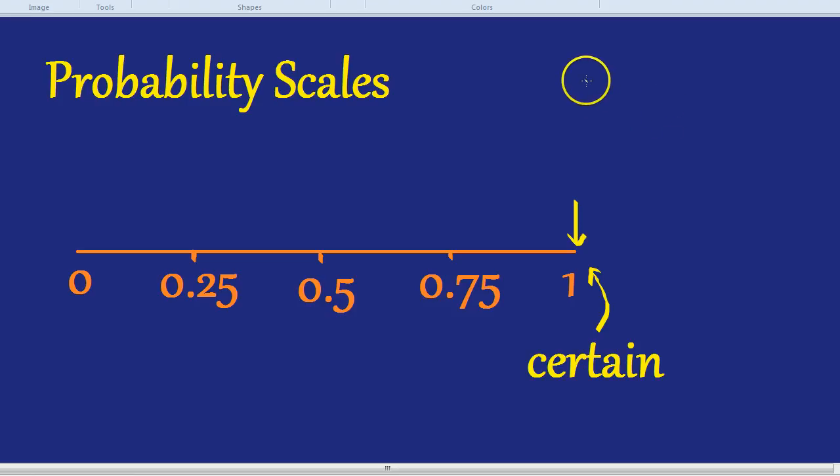Okay, how about another probability? What's the chances when I flip a coin I get a tails? Well, there's two different possibilities, heads or tails. So a tails is 50-50, which is a half.